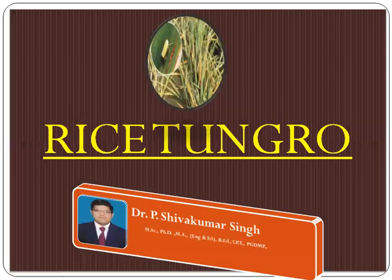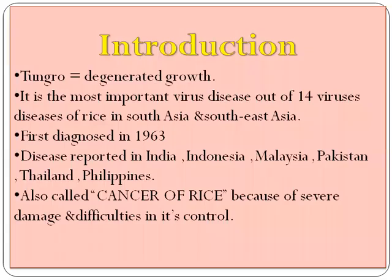Myself, Dr. Shiv Masin. Let us see Rice Tungro disease. Tungro means degenerated growth. It is the most important virus disease out of 14 virus diseases of rice in South Asia and South East Asia.